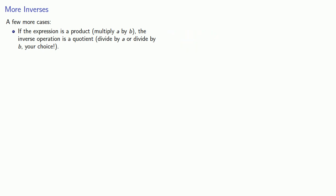On the other hand, if the expression is a quotient, divide by A, the inverse operation is going to be a product, multiply by A. Here we don't have a choice. We have to multiply by whatever we divided by.